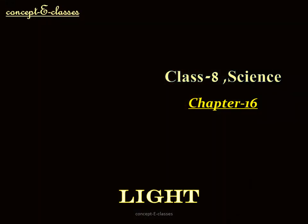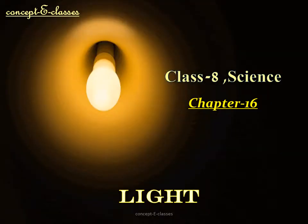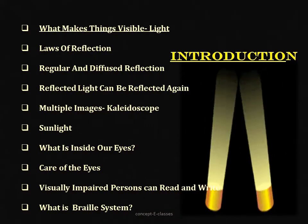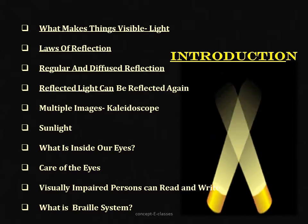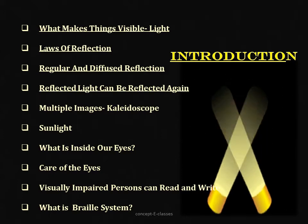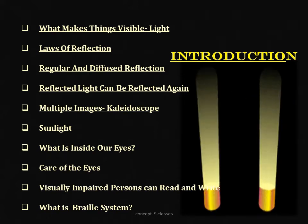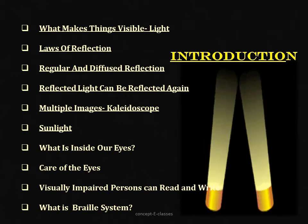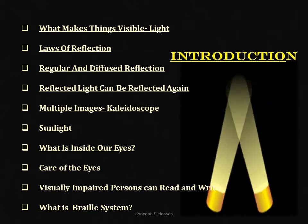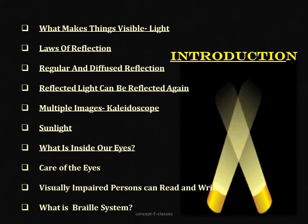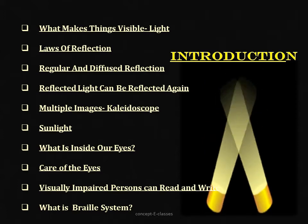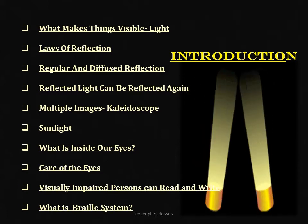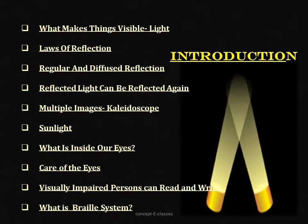This is Concept E Classes and today we will deal with Chapter 16 of Class 8 Science: Light. In this chapter we will cover what is light and how we see objects, the laws of reflection, types of reflection (regular and diffused), multiple images, the kaleidoscope, sunlight, the human eye, care of eyes, visually impaired persons, and the Braille system.